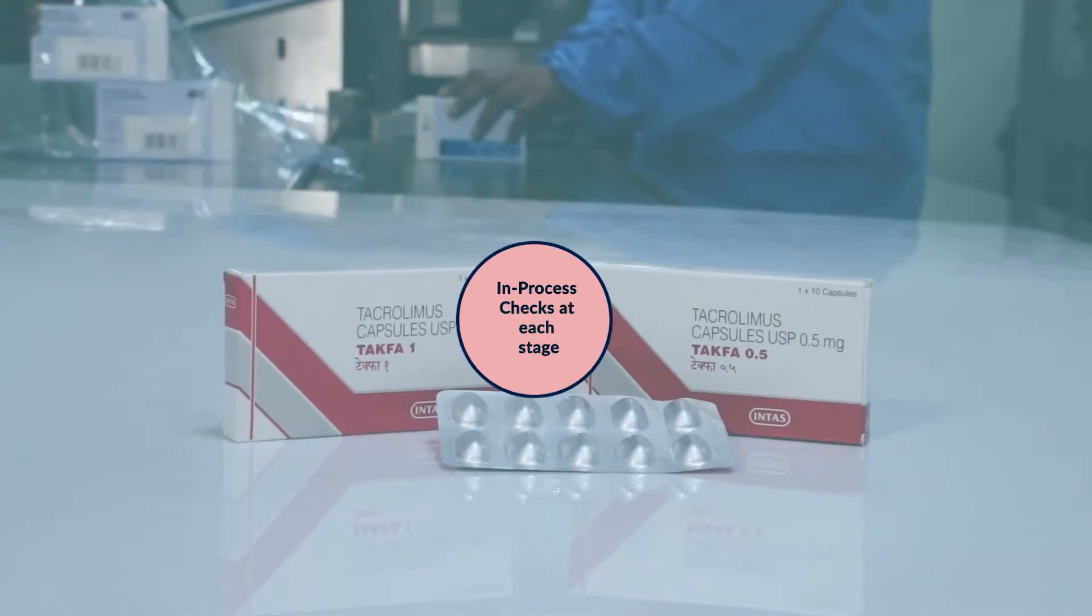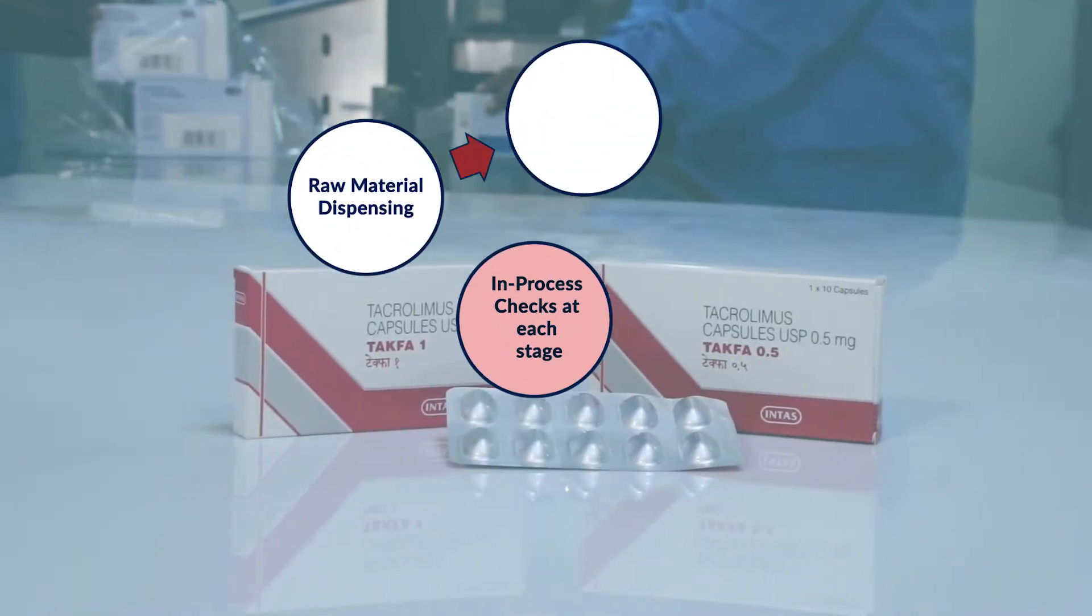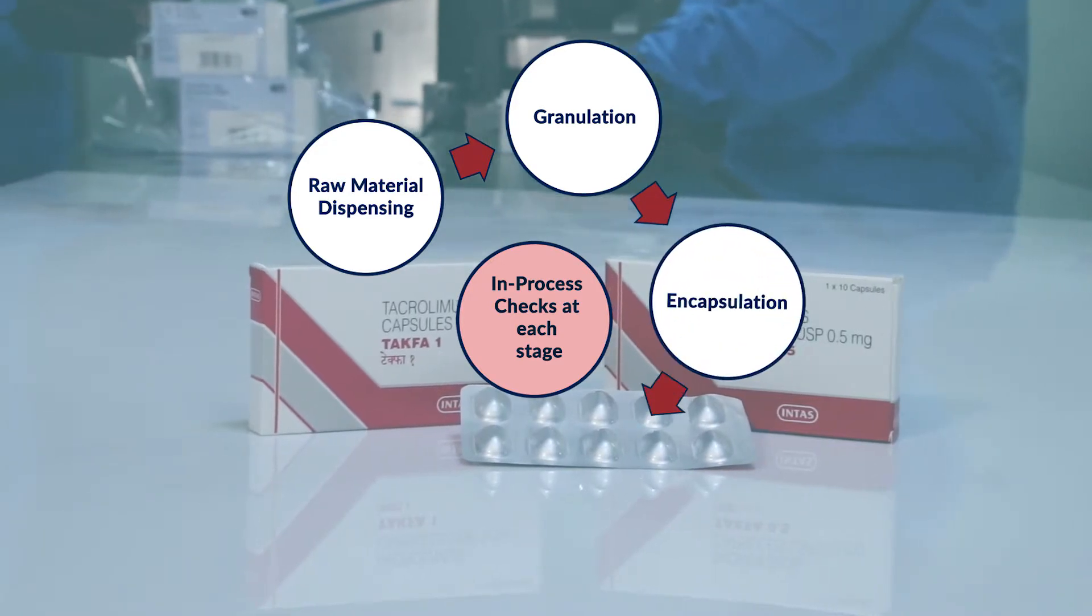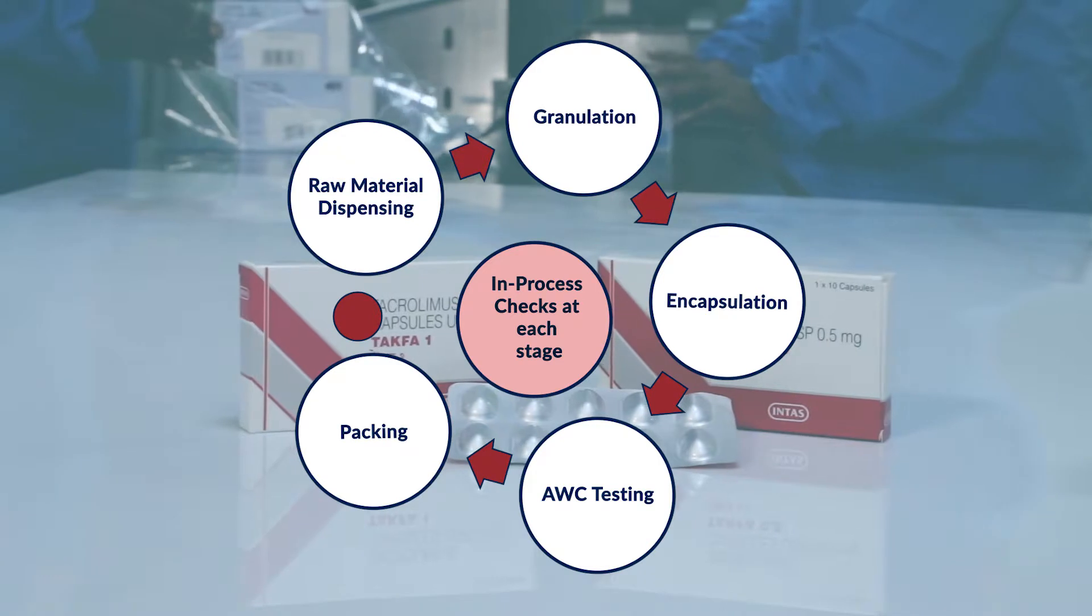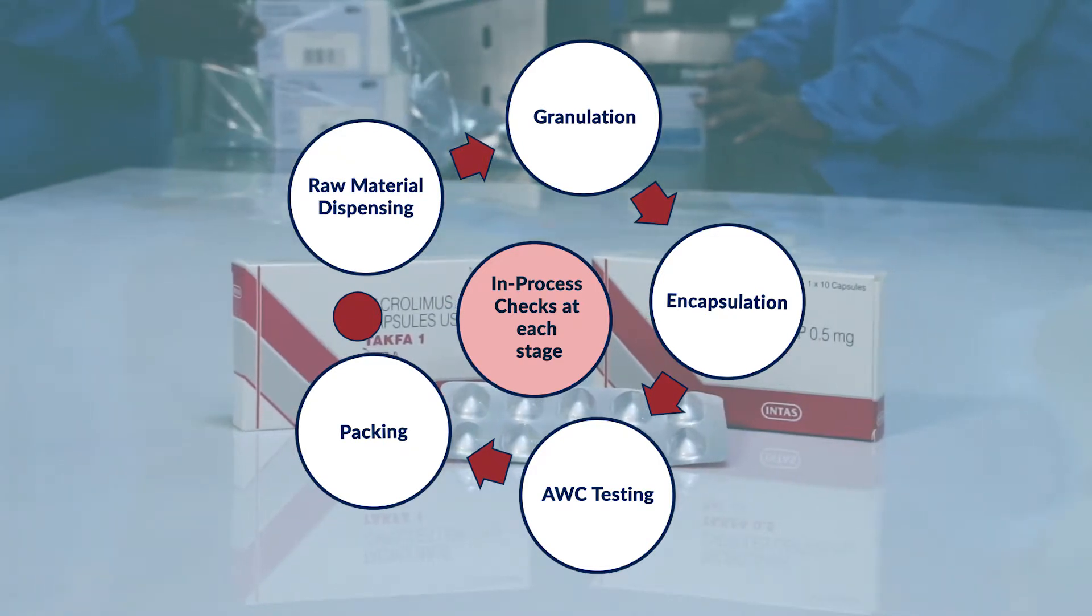In process checks at each stage: raw material dispensing, granulation, encapsulation, AWC testing, packing.